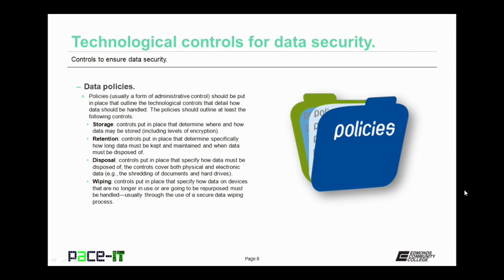Retention policies are controls put in place that determine specifically how long data must be kept and maintained, and when data must be disposed of. That moves us to disposal policies — controls that specify how data must be disposed of. These controls cover both physical and electronic data, and should specifically outline the proper disposal method for each type, such as the shredding of physical documents or the sanitation of hard drives. Finally, there is a wiping policy — controls specifying how data on devices that are no longer in use or going to be repurposed must be handled, usually through a secure data wiping process.